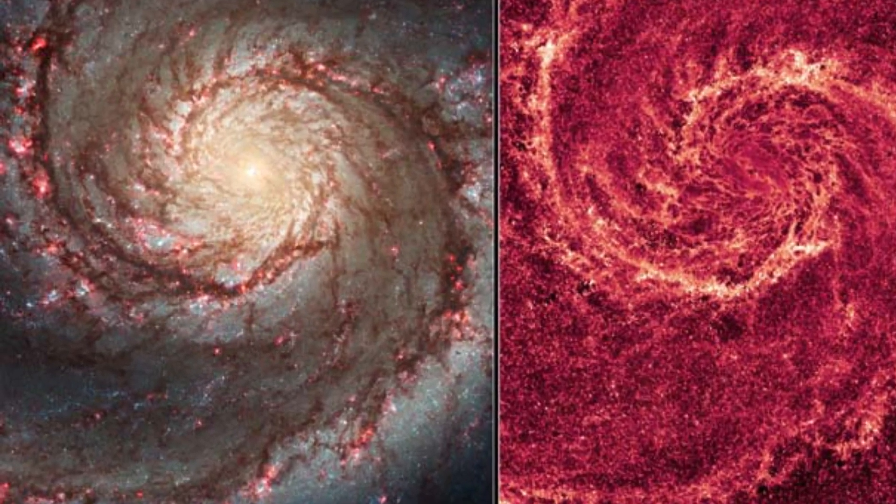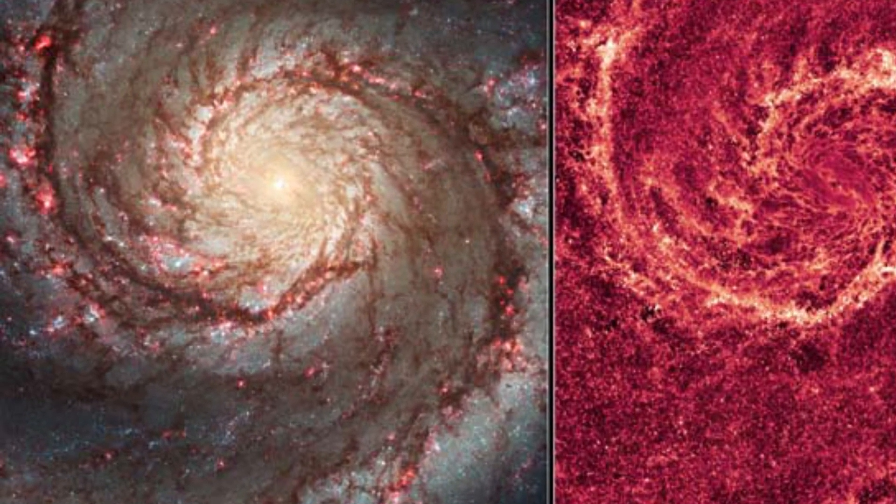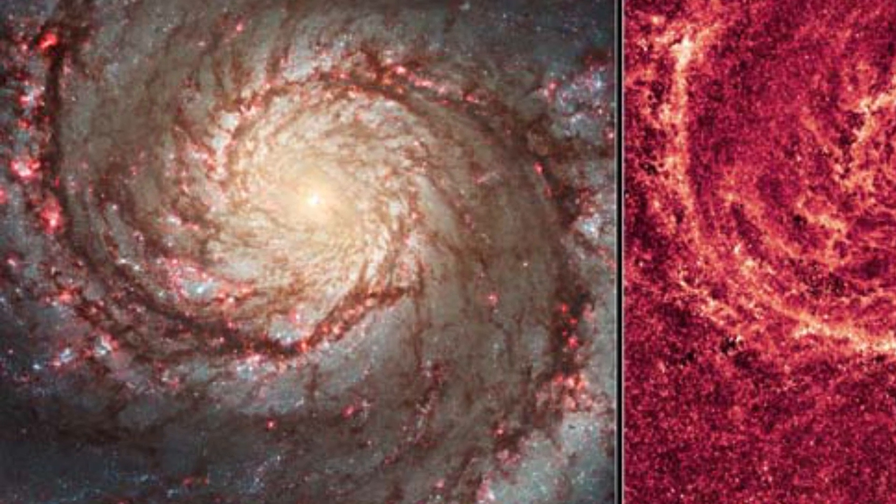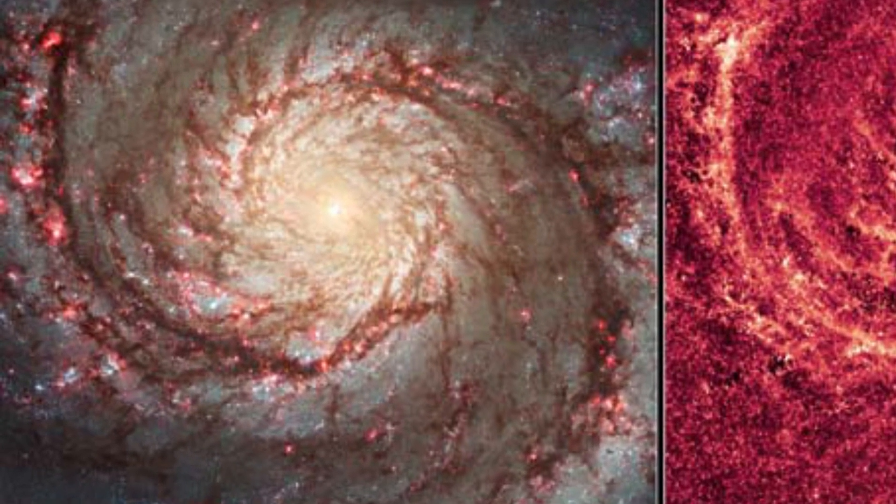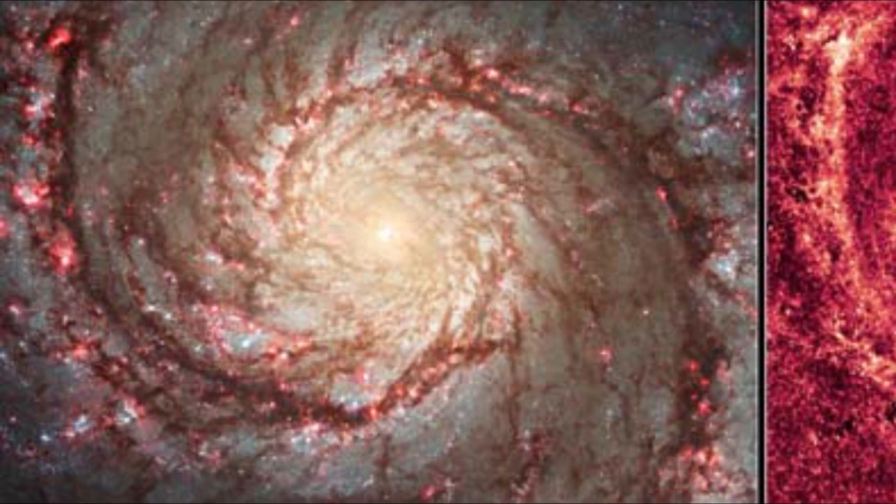The graceful winding arms of the grand design spiral galaxy M51 stretch across this image from NASA's James Webb Space Telescope. New JWST observations of the early universe are upending our understanding of galaxy evolution.